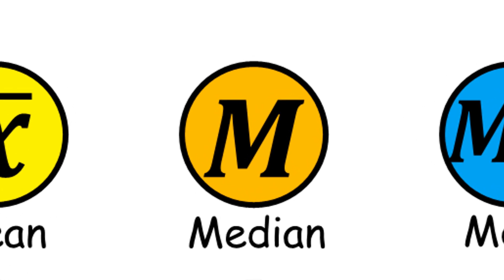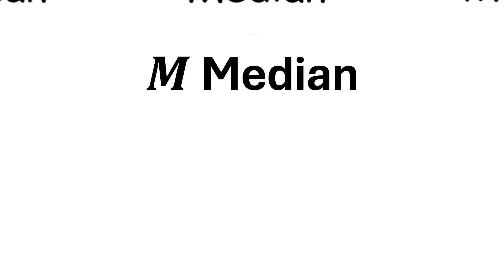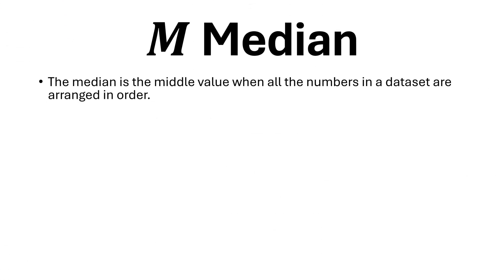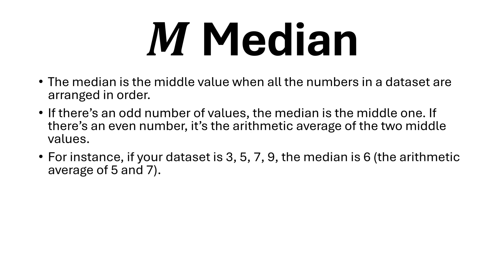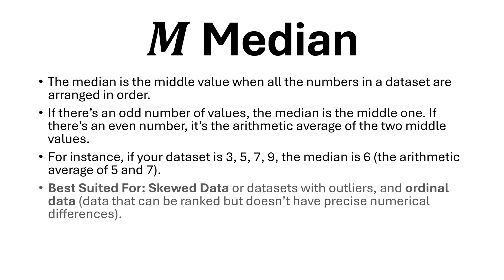Median. The median is the middle value when all the numbers in a dataset are arranged in order. If there's an odd number of values, the median is the middle one. If there's an even number, it's the arithmetic average of the two middle values. For instance, if your dataset is 3, 5, 7, 9, the median is 6 — the arithmetic average of 5 and 7.